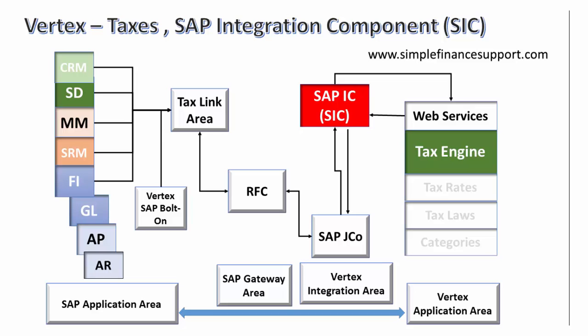From a configuration point of view, the SAP Integration Component is a technical integration. Basis people will install it using the installation guide for SAP IC and the SAP Java component. Within SAP, ABAP developers configure all RFC calls under the logical destination for the RFC call to the tax engine. Based on the Vertex bolt-on and SAP configuration, the tax link area is pre-determined — it collects all information, presents it to Vertex, retrieves the response from the tax engine, and all calculations happen in the SAP application area.